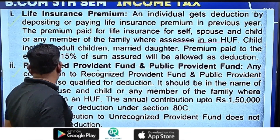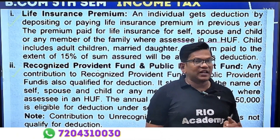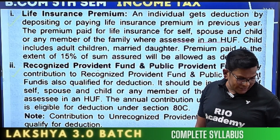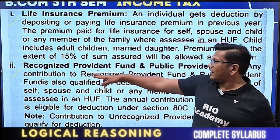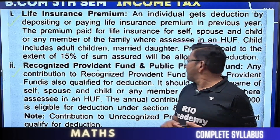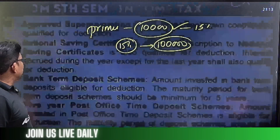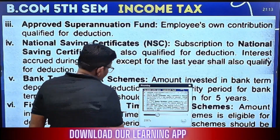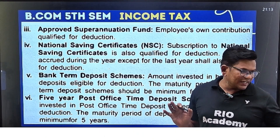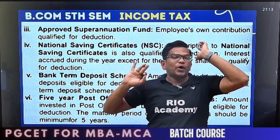The annual contribution is maximum up to 1.5 lakh. Note: contribution to unrecognized Provident Fund (URPF) is NOT eligible for deduction. Only recognized PF qualifies. The maximum 80C deduction is 1.5 lakh rupees.